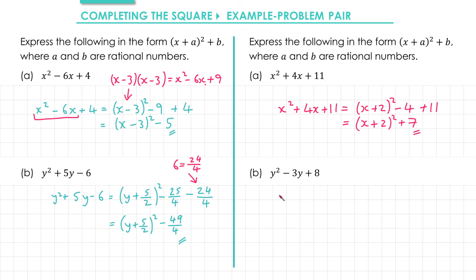In part B we have y squared minus 3y plus 8. In our brackets we have y, half of negative 3 is negative 3 over 2, all squared. If we do negative 3 over 2 squared that gets us positive 9 over 4. That's the extra bit we don't want so we subtract 9 over 4. And then we've got 8 on the end which we can write as 32 over 4.